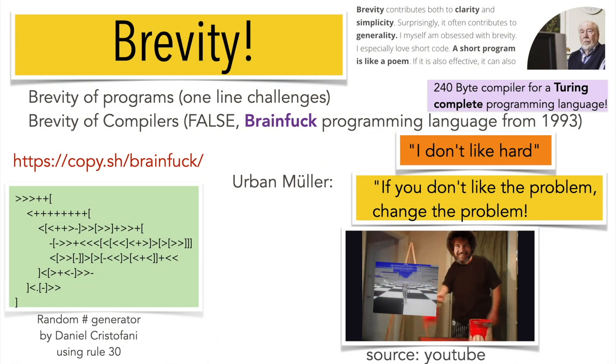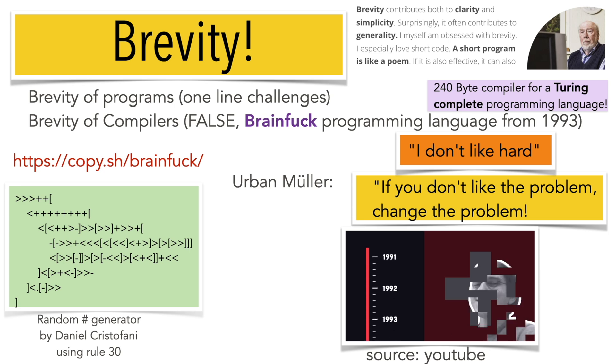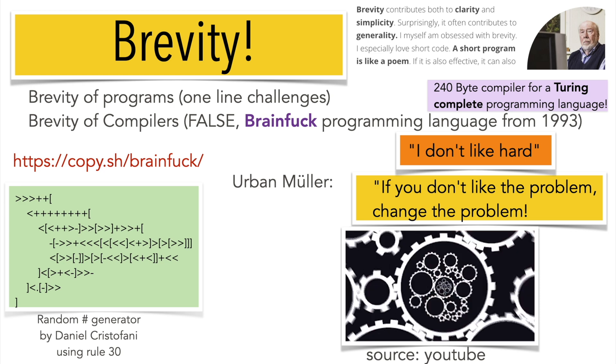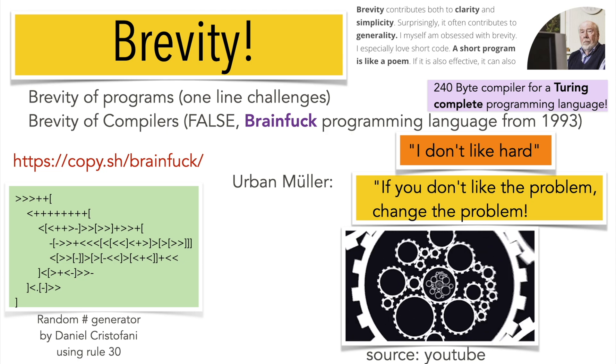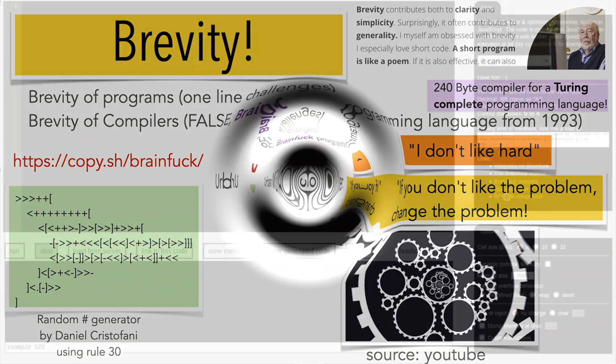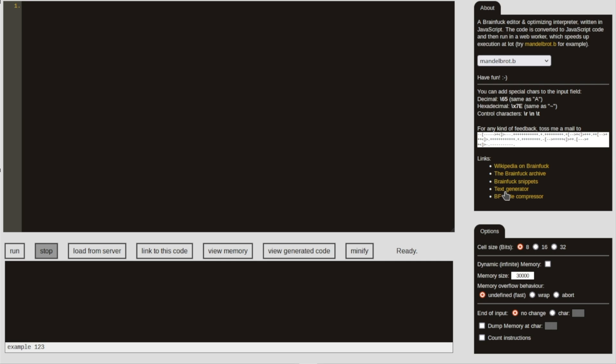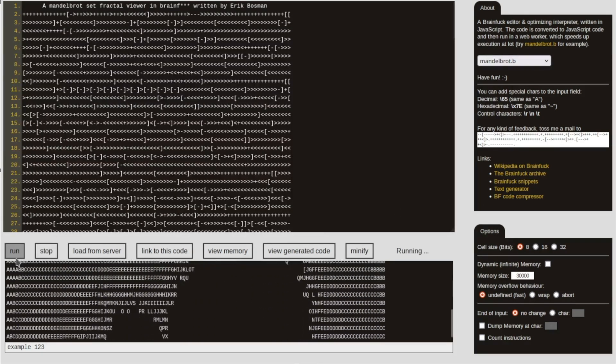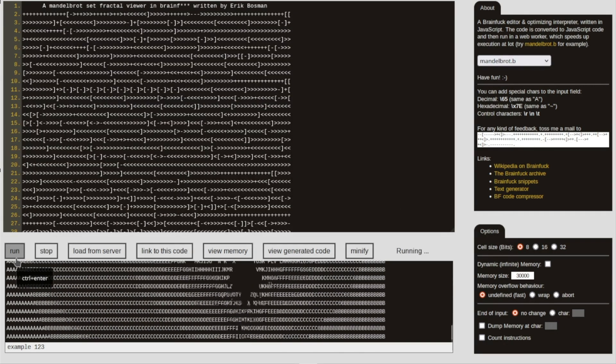Brevity has tradition in computer science. Turing showed that a single tape with a mechanism to write and change states produces languages allowing to compute anything. Brainfuck was created in 1993 by Swiss physics student Urban Mueller where the goal was to create a language with the smallest possible compiler, 240 bytes. Here is a computation of the Mandelbrot set written in Brainfuck.